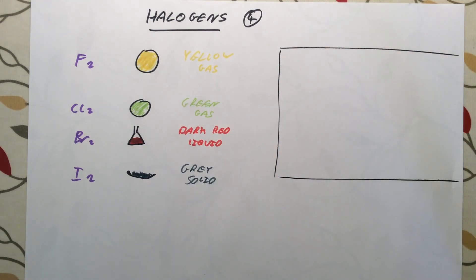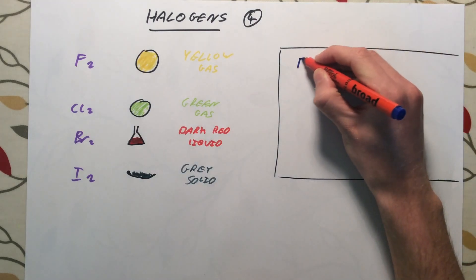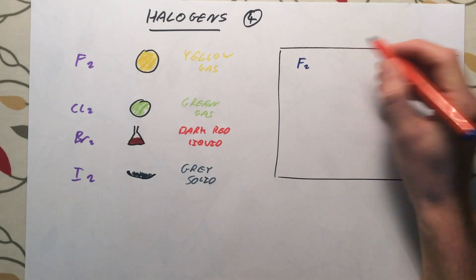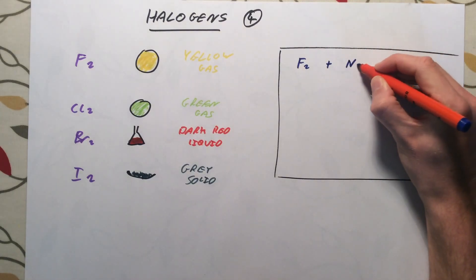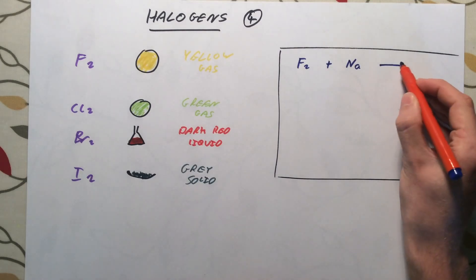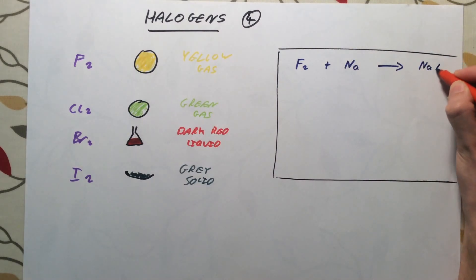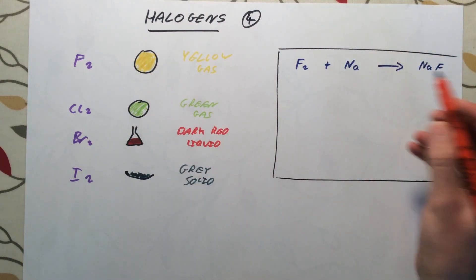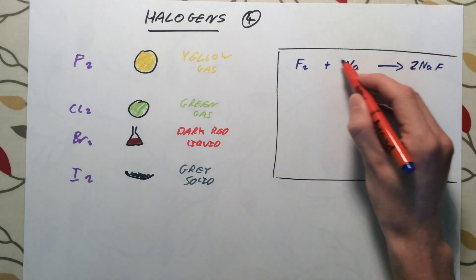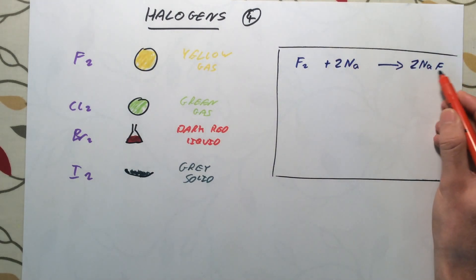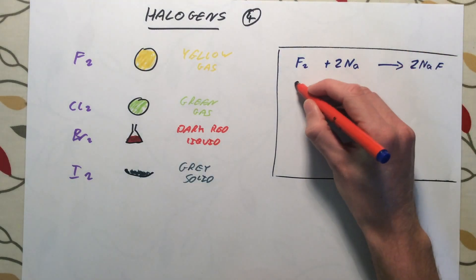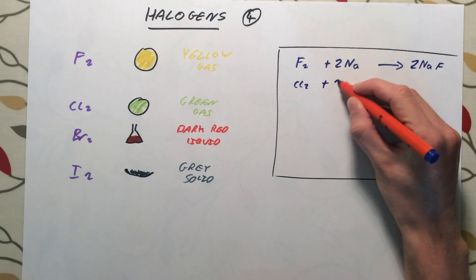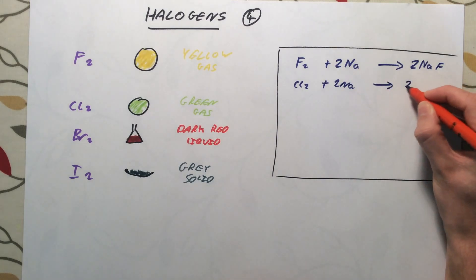Whenever you react one of the halogens with metals, you always get what we call a metal halide. For example, fluorine gas reacting with sodium metal gives sodium fluoride, NaF. You need to balance this: 2Na + F2 → 2NaF. Similarly, if you had chlorine and sodium, you would get sodium chloride — table salt.